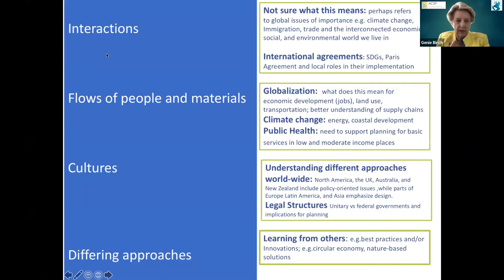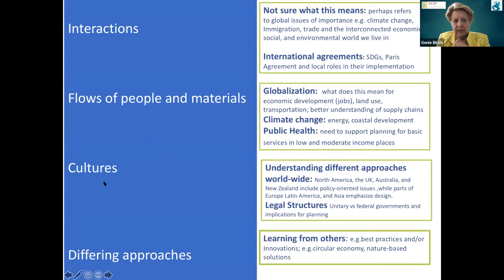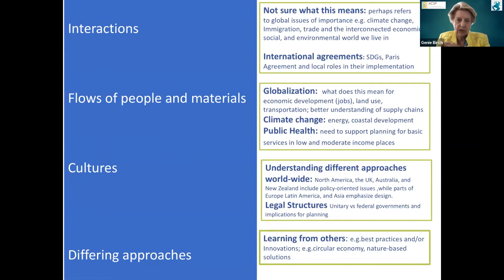There were these four characteristics that Ed went over: it must reflect interactions, flows of people, materials, cultures, and differing approaches. This is really very vague, very undefined, and the question is whether this particular set of things we're supposed to be looking for is fit for purpose. What are we trying to do for our master's students? What do we think the core knowledge should be?